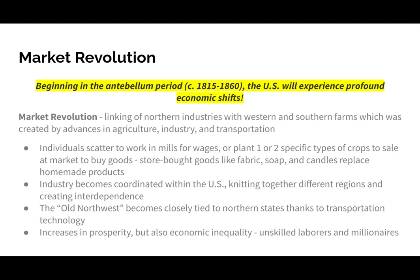For the U.S., the market revolution was the linking of northern industries to western and southern farms. This happened because of big advances in agriculture, industry, technology, and transportation, along with legislation and judicial decisions that furthered these changes. Individuals who had been on self-sustaining farms started working in mills for wages, or if they stayed on farms, they planted one or two cash crops to sell at market to buy goods. Store-bought items like fabric, soap, and candles replaced homemade products. Industry became increasingly coordinated, knitting together different regions and creating interdependence.